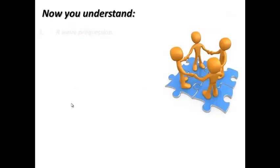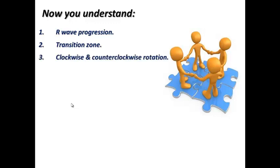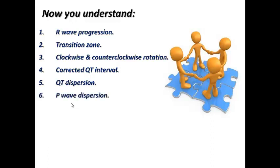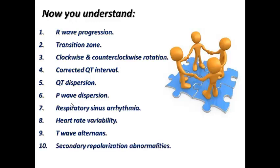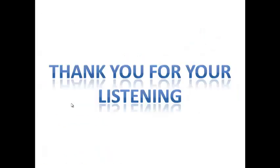In summary: we covered R-wave progression and the transition zone in precordial leads; clockwise and counterclockwise rotation; corrected QT interval; QT dispersion (important in long QT syndrome); P-wave dispersion (predictor of atrial fibrillation); respiratory sinus arrhythmia (a physiological phenomenon); heart rate variability (seen in Holter ECG); T-wave alternans (a rare but grave sign); secondary repolarization abnormalities involving ST and T-wave changes with certain cardiac disorders; and dominant R-wave in aVR. Thank you very much for listening.